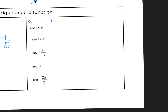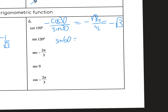Cotangent is cosine over sine. For 150°, the reference angle is 30°, so that's cosine 30 over sine 30. That's in quadrant 2, so it's negative. Cosine of 30 is √3/2, sine of 30 is 1/2 — get rid of your twos and it's negative √3. Sine of 120°: I think of that as sine of 60°, it's also positive, so that's just √3/2. Secant is related to cosine, so I think of that as cosine of π/3. Negative 2π/3 is in quadrant 3, so it's negative — cosine of π/3 is 1/2, flip it over, so secant is negative 2. Cosecant of that angle: sine is √3/2, so it's going to be 2/√3, and that's in quadrant 3, so that's negative.